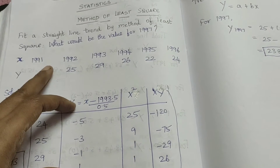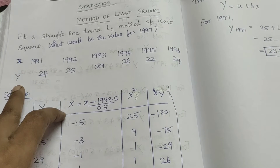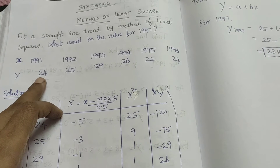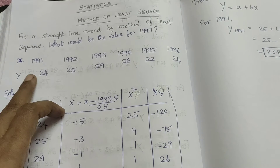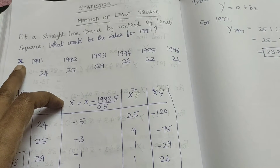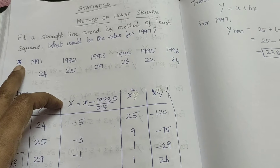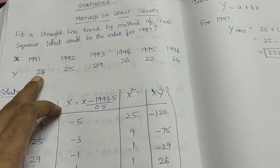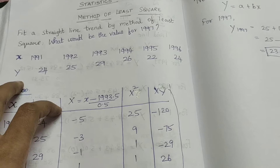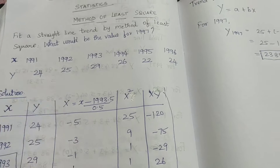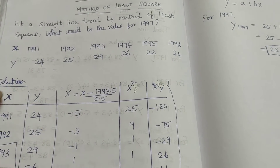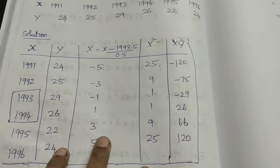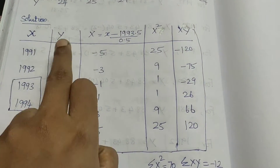We will discuss the details: year, production, sales, and other variables. We will discuss the year as small letter x, and the variable values as capital letter Y. We will discuss the data both horizontally and vertically.